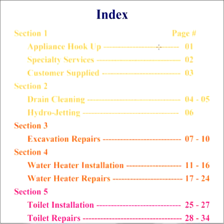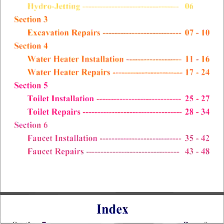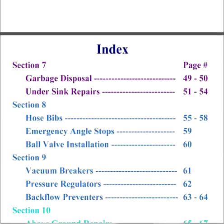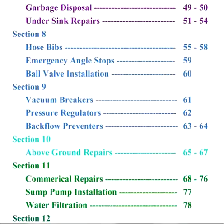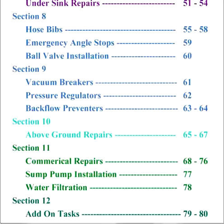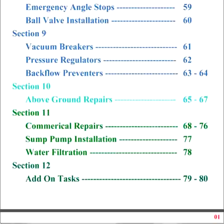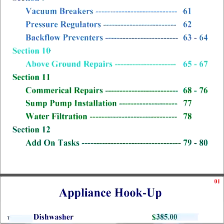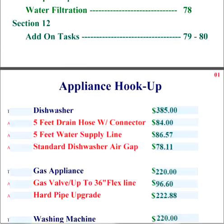Our index is not only number coded, but it is also color coded to match dividers that are sold at any office supply store so that when your technicians are in the field, they can find exactly what they're looking for quickly and easily. There are 12 sections to the price book — 10 of them being residential service repair, one being commercial service repair, and the last one is water filtration.